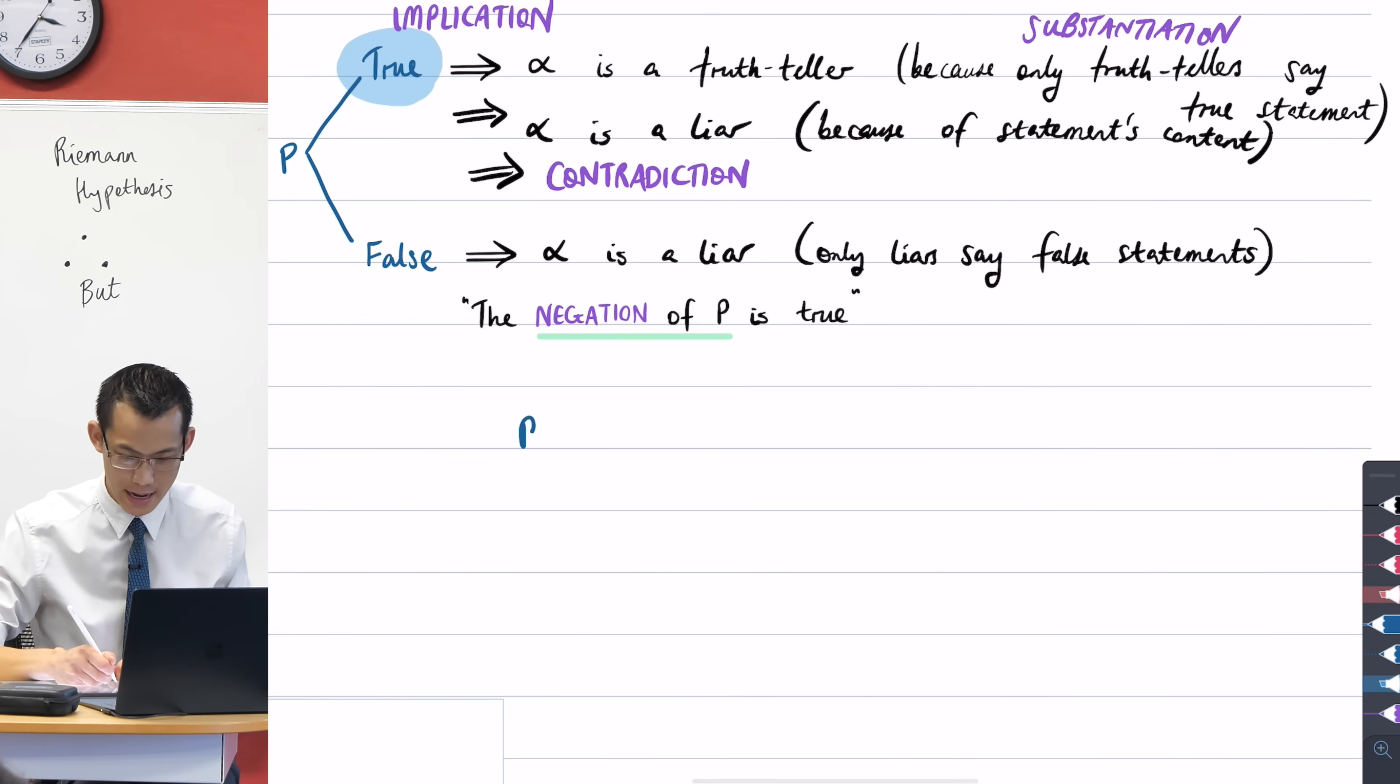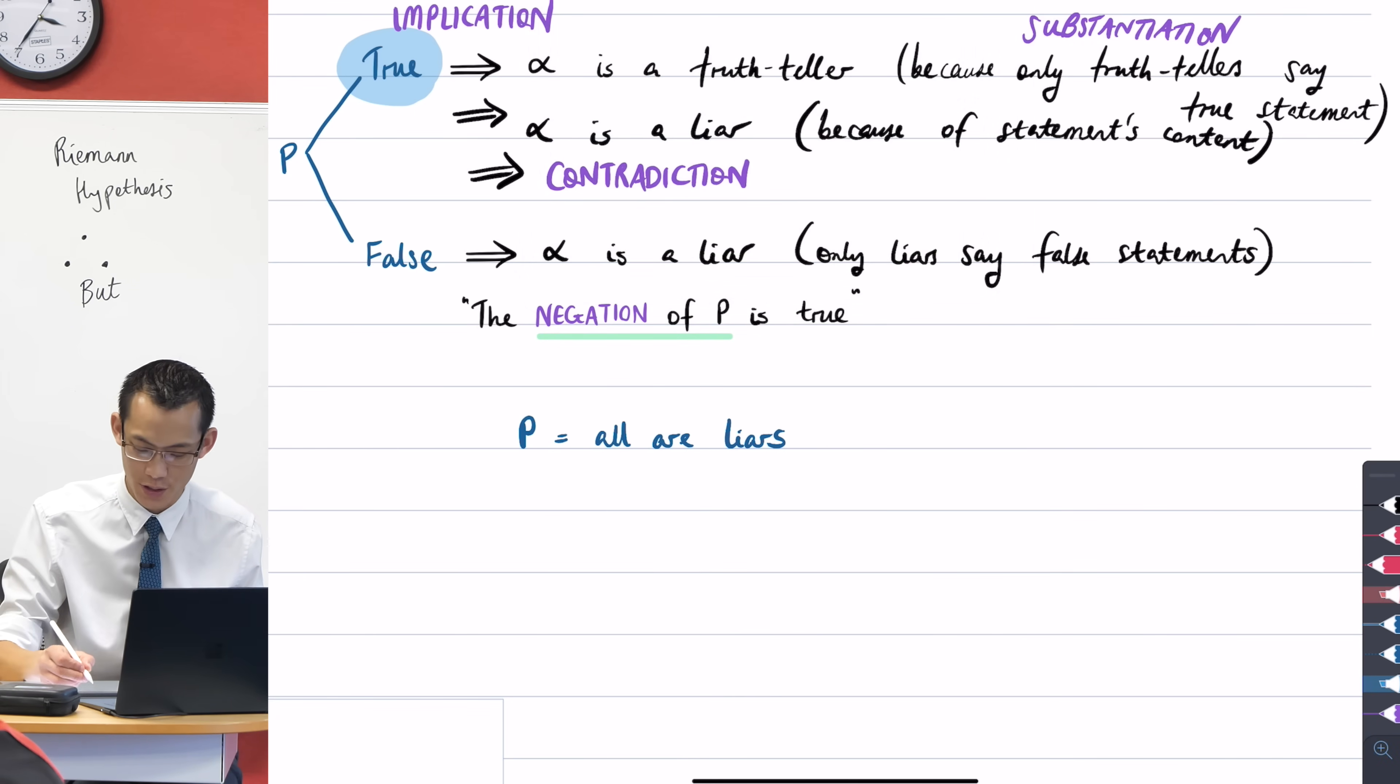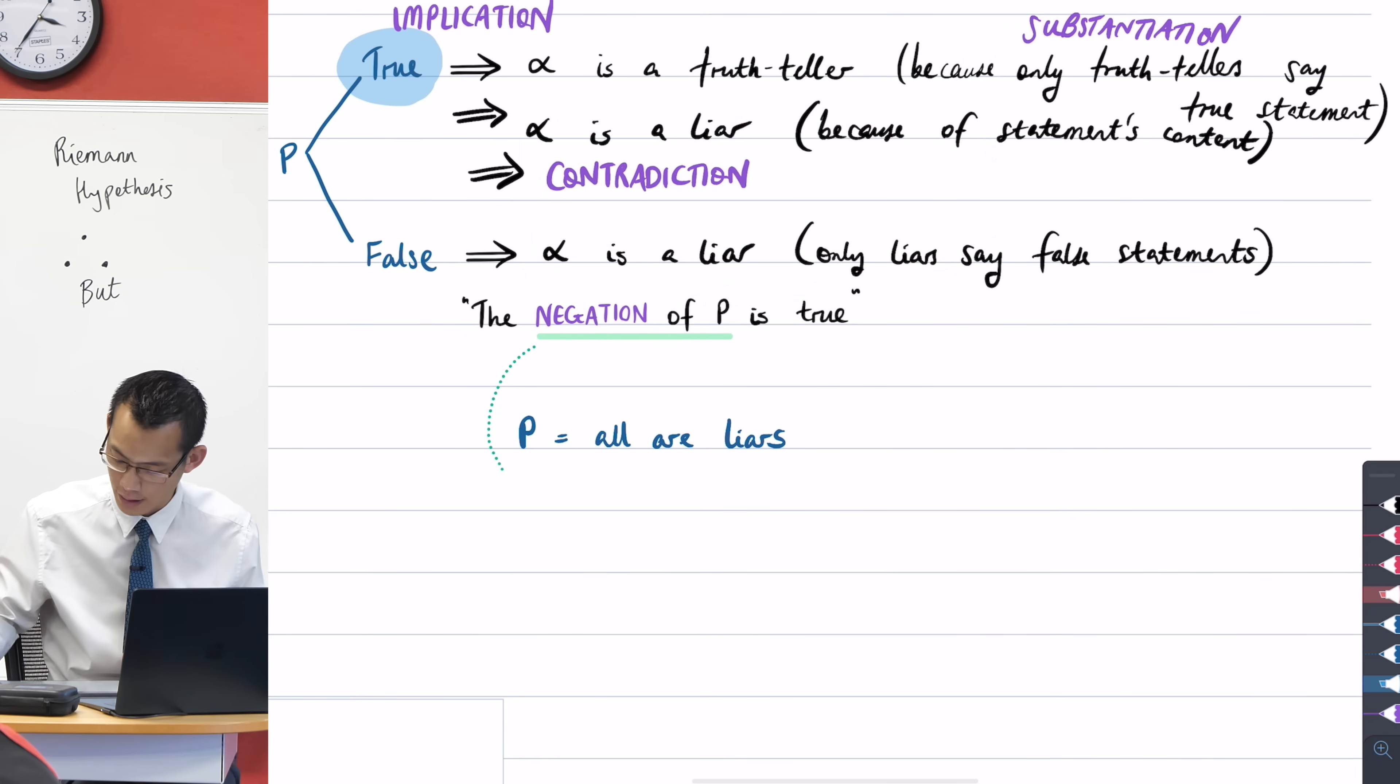And as you're going to see in a second, there's a couple of different ways to actually write the negation or the opposite of something. So if I say that P means that all are liars, the simplest way to say the negation of P, and we've got a symbol for this by the way, because as we've already described, we try and introduce symbols so that we can say stuff faster.